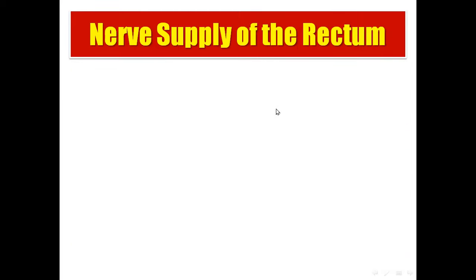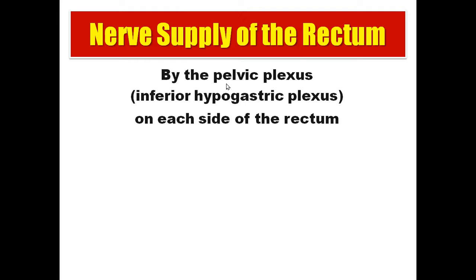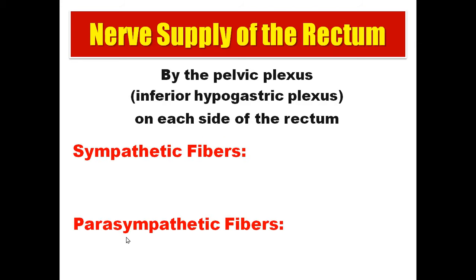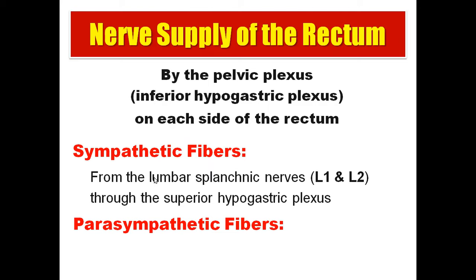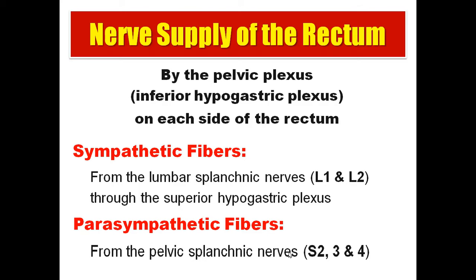Regarding the nerve supply of the rectum: the rectum is supplied by the pelvic plexus, also called the inferior hypogastric plexus, which is present on each side of the rectum. This plexus is formed by sympathetic fibers — from the lumbar splanchnic nerves L1 and L2 through the superior hypogastric plexus — and parasympathetic fibers from the pelvic splanchnic nerves arising from S2, S3, and S4.